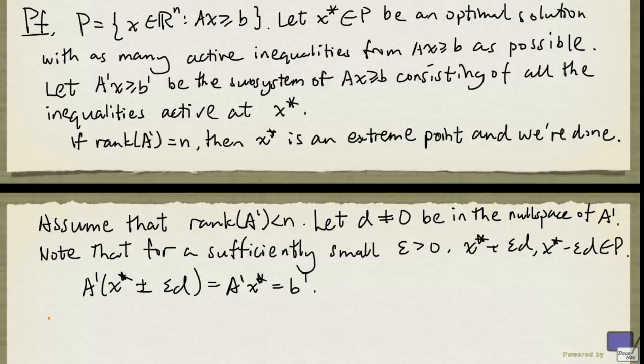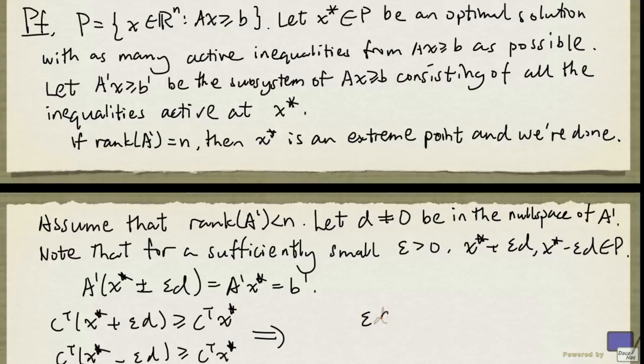Because x* is optimal, what we can say is c^T(x* + εd) is at least c^T x*. The objective function value cannot be less than the optimal value. Same thing for x* - εd. And simplifying these, we get εc^T d ≥ 0 and -εc^T d ≥ 0. And combining these two, we see that c^T d has to be 0.